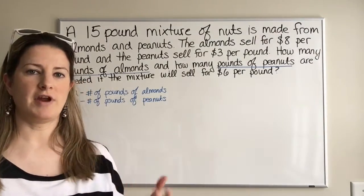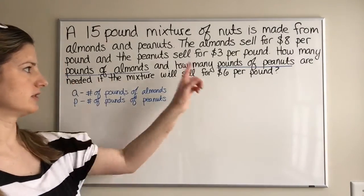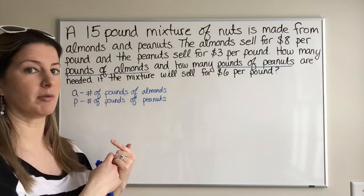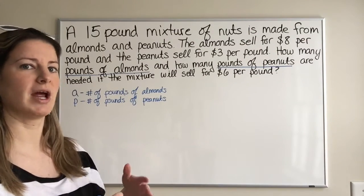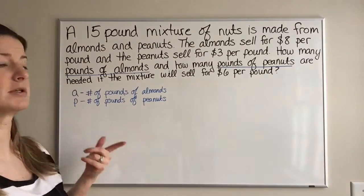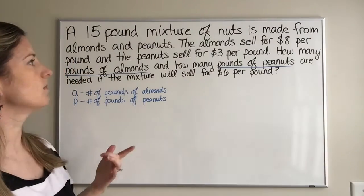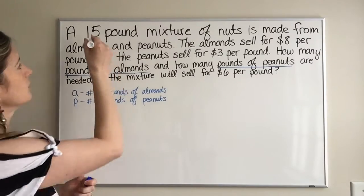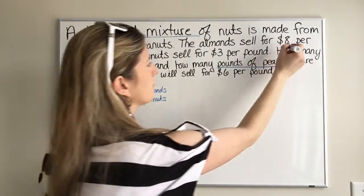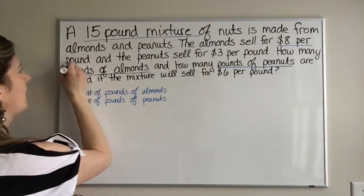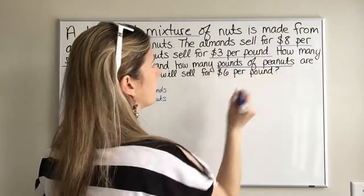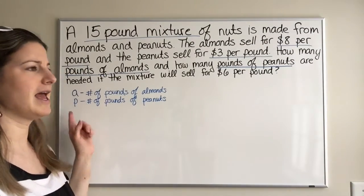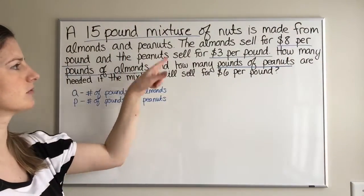Now that we've defined our variables based on what the question was asking, we can look at the rest of the information in the problem and try to set up a system — two equations, since we have two variables. A good thing to do is underline the numbers you see: 15-pound mixture, $8 per pound, and $3 per pound.